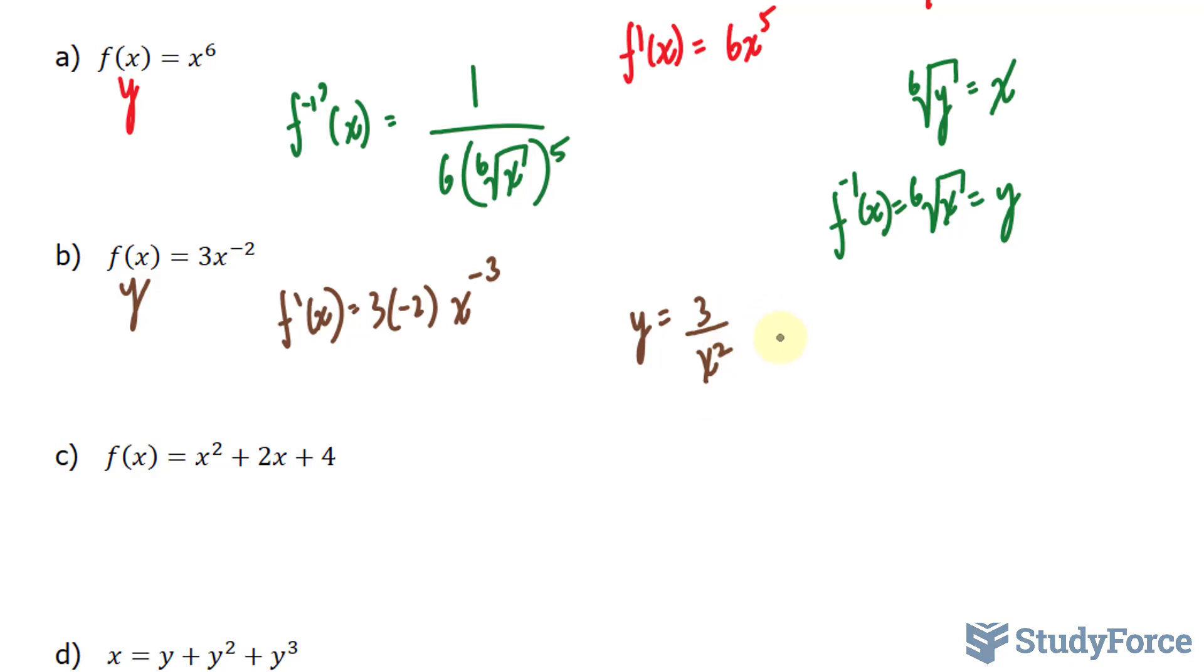I'll solve for x. Multiply both sides by x squared. Divide both sides by y and square root. So we have the square root of 3 over y, which I'll replace with x, is equal to y.